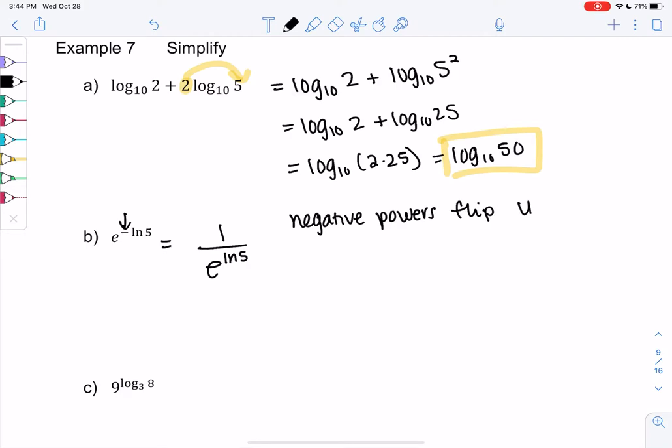Right, they flip it. And then e and ln are inverses so they cancel out and I just get 5 so I get 1 fifth here because it's in the denominator. And that's it. And that only works because ln has base e.